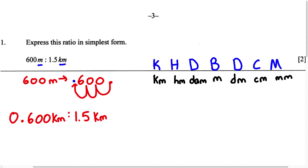Now we can see we have the same unit, which is kilometers. Because we have the same unit, we're good to go. We can now express this ratio in its simplest form using our calculator.